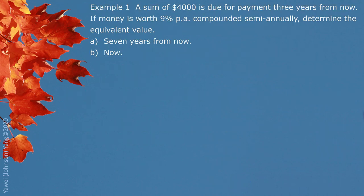Example 1: a sum of $4,000 is due for payment 3 years from now. If money is worth 9% compounded semi-annually, determine the equivalent value 7 years from now, or now. The $4,000 is due 3 years from now, meaning if you pay out this debt, you need to pay $4,000 three years from now.